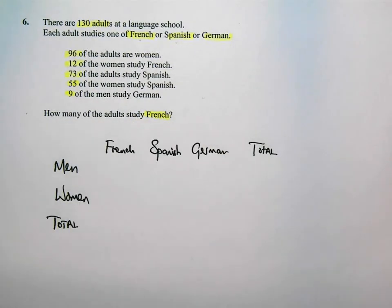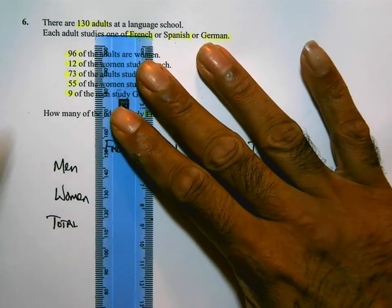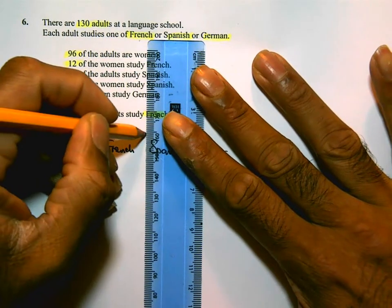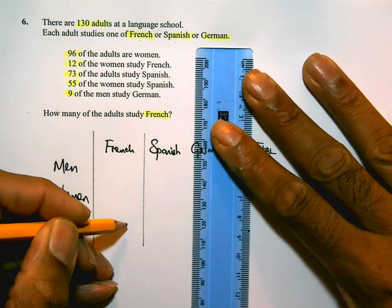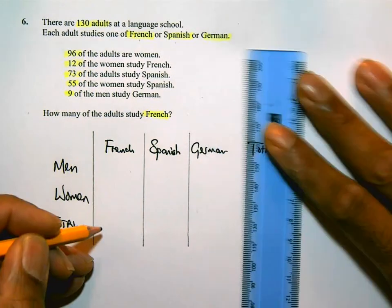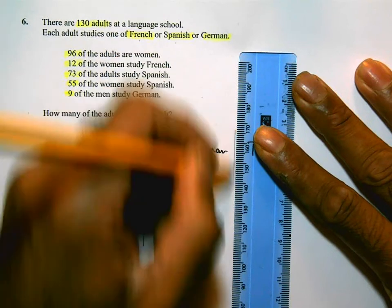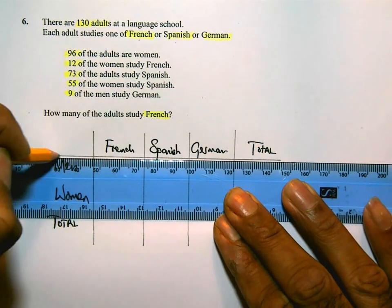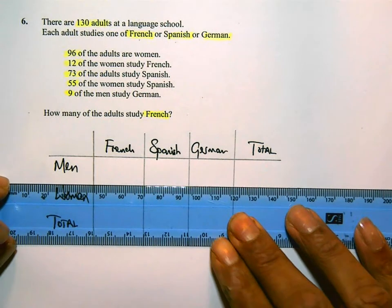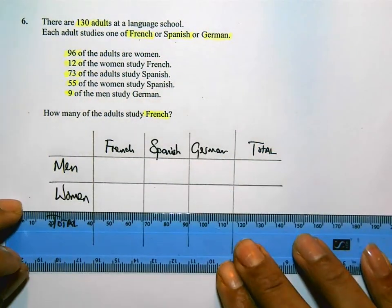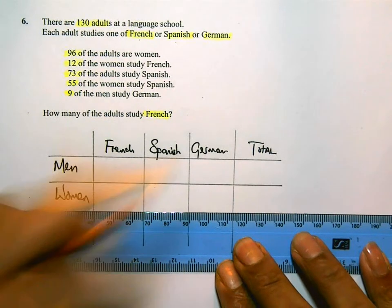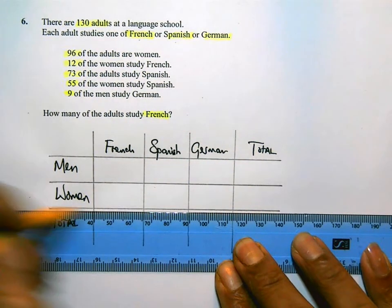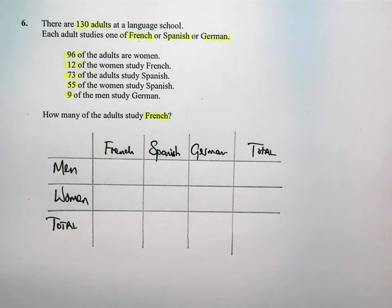Okay, so let's just set this up. It doesn't need to be a work of art. A lot of people spend ages creating boxes and trying to get them all equally spaced — that's not important. It's the numbers in there that you need to make sure are accurate. So, those are the languages, and then there are two genders we're dealing with: men and women. As we proceed through this, I'm going to tick off any boxes or numbers that I actually have as I go through. Start from the very beginning.